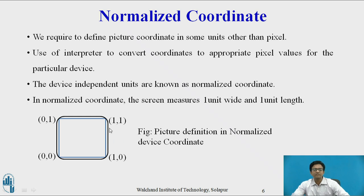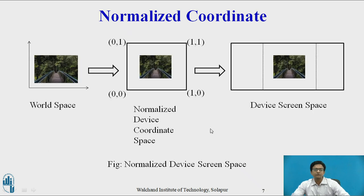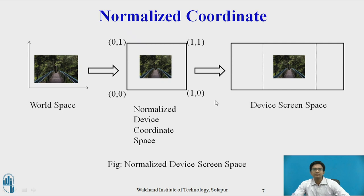Once a picture is mapped to normalized device coordinates, after that we map it to the screen — that is, to the viewport. You can see this image from world space is mapped to normalized device coordinates, and after that it is mapped to the device, that is to your screen, so that the image is not distorted and the image size is not decreased.